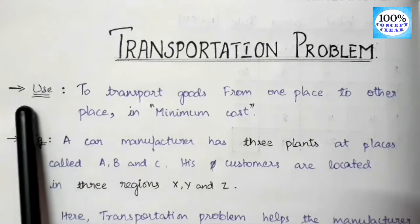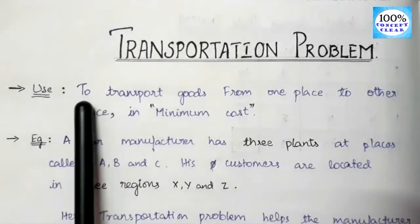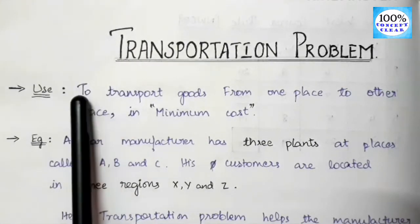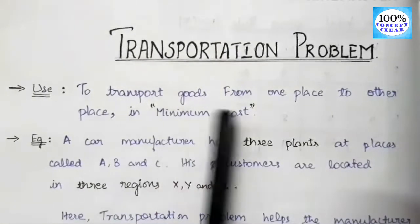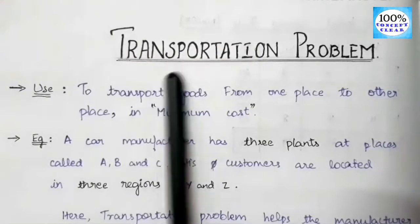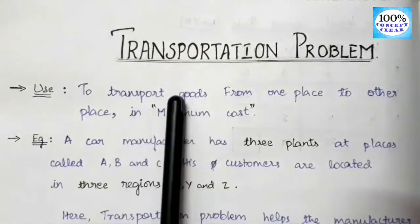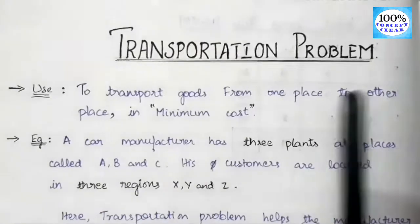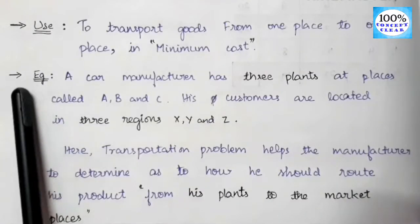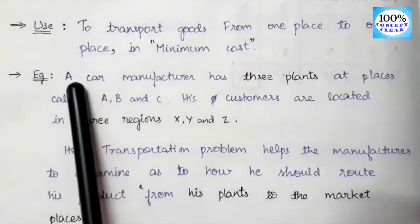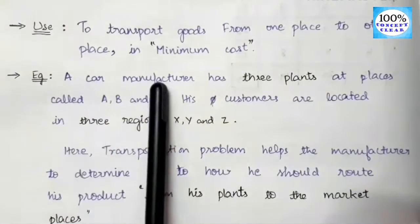The transportation problem is used to transport goods from one place to another at minimum cost. It helps the manufacturer transport his product from one place to another at minimum cost. For example, a car manufacturer has three plants — the places where he manufactures his product.